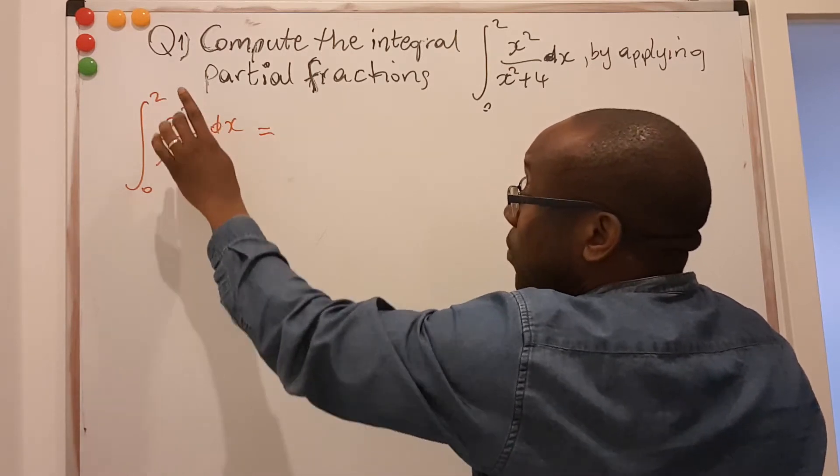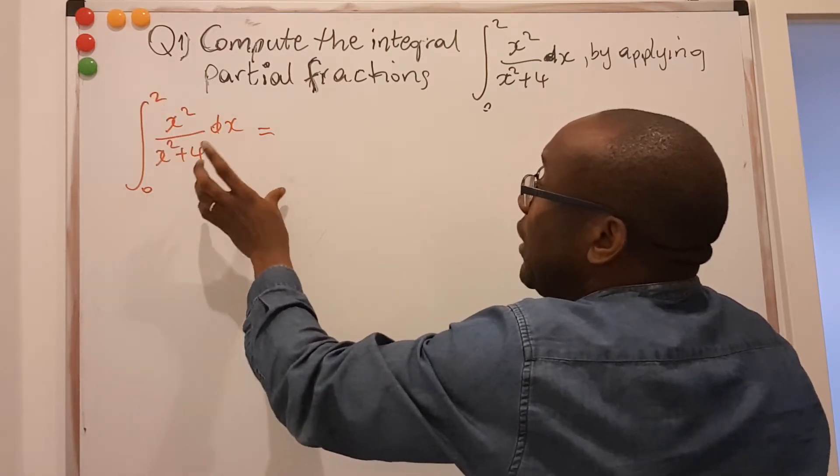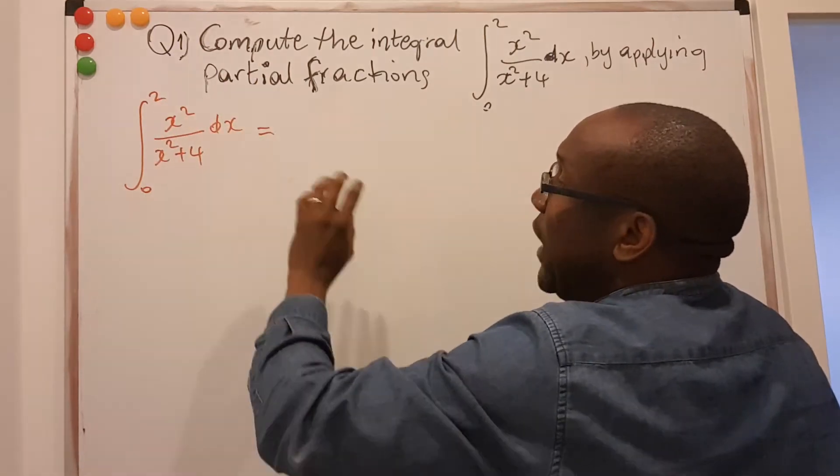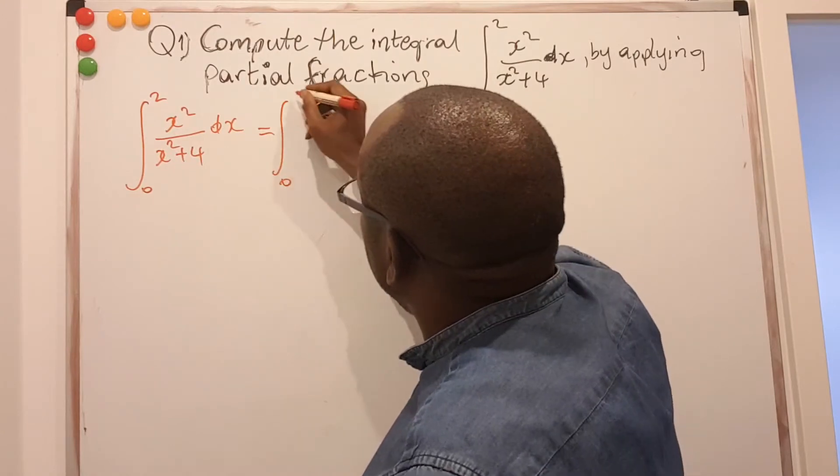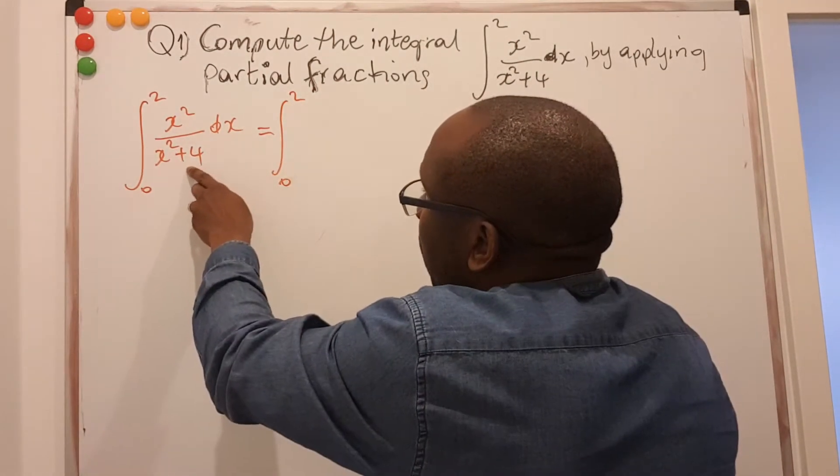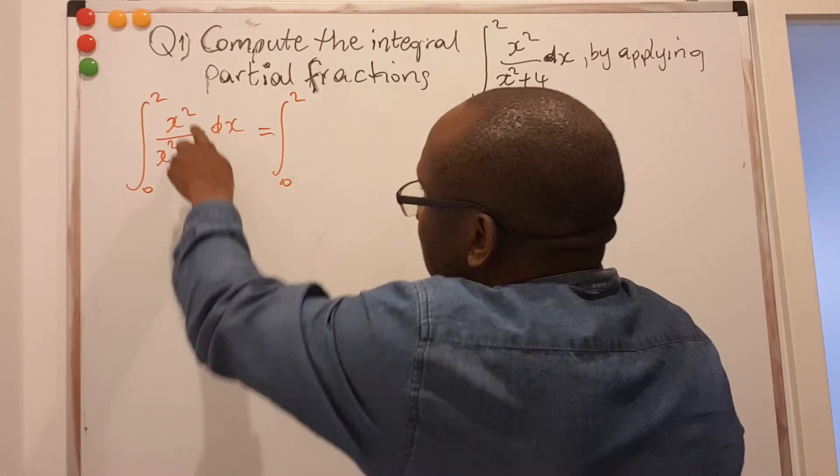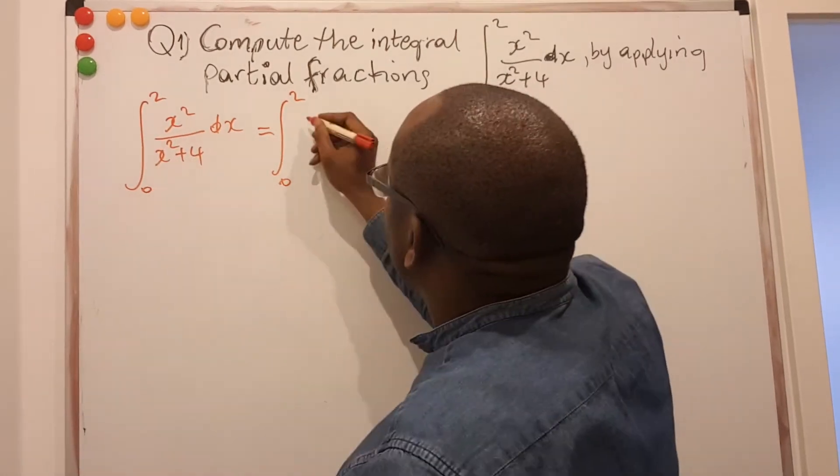If your degree is the same for both the numerator and denominator, then you can always play around to get something that looks the same on both. So what I will do is from 0 to 2, x squared plus 4 is below, there is no x squared plus 4 above, I want to have the same, so it looks close to that.